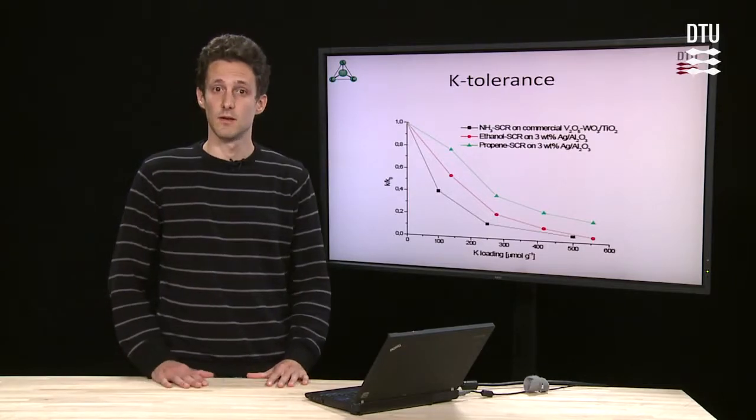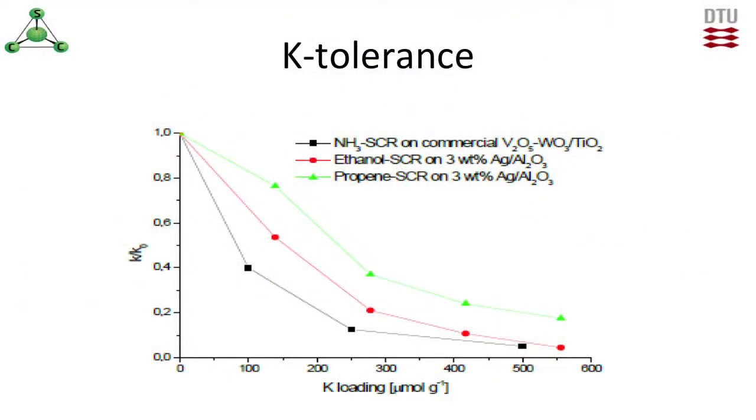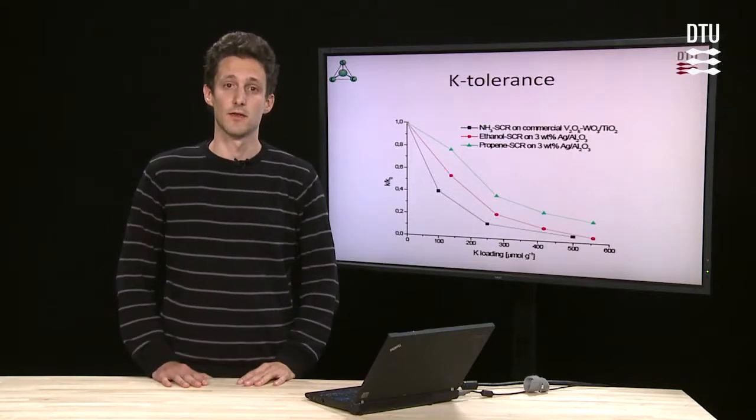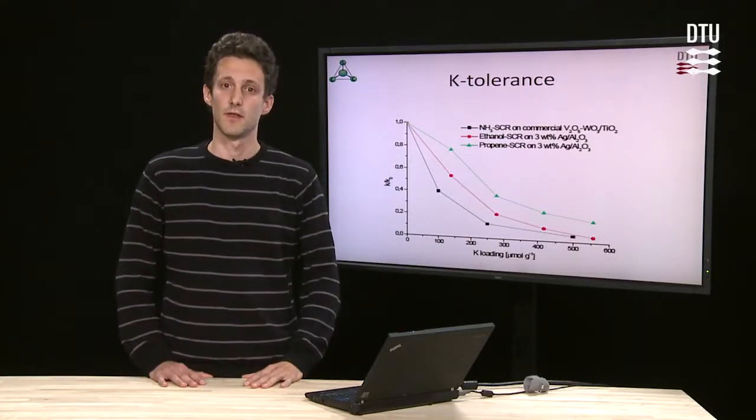We have tested the potassium tolerance of different reductants and we can see that the hydrocarbons, namely propene and ethanol, show a much higher potassium tolerance than the ammonia SCR.